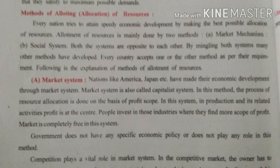Let's start with the market system. The market system is also called the capitalist system. These types of economy are very important, so pay attention. It's better that all of you open the textbook. America and Japan have made their economic development through the market system.